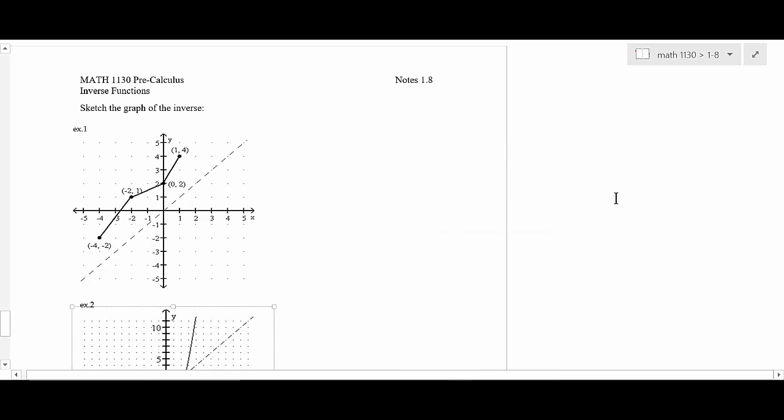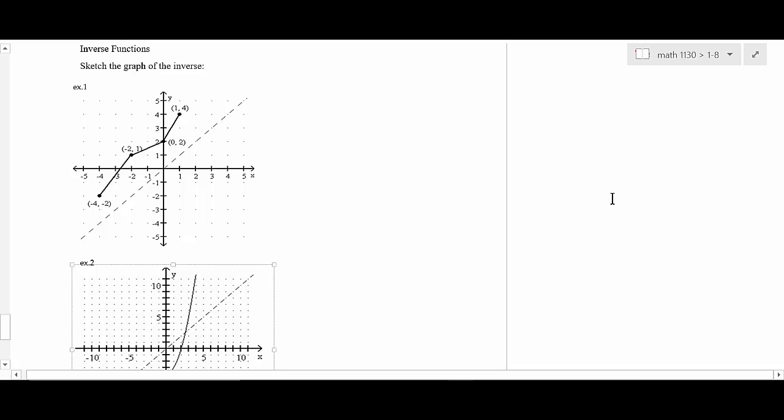Get in and finish this up. This right here is actually a real simple thing to do. First of all, is this a one-to-one function? Yeah, how do you know it's one-to-one? Because it passes the horizontal line test, like we talked about last time.